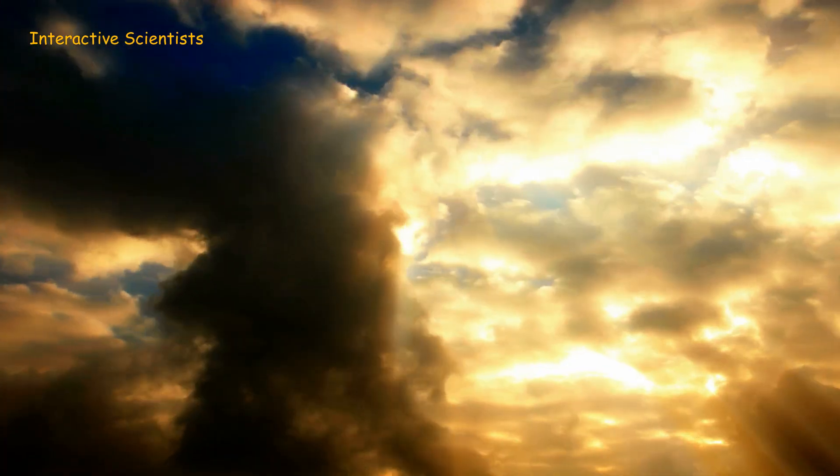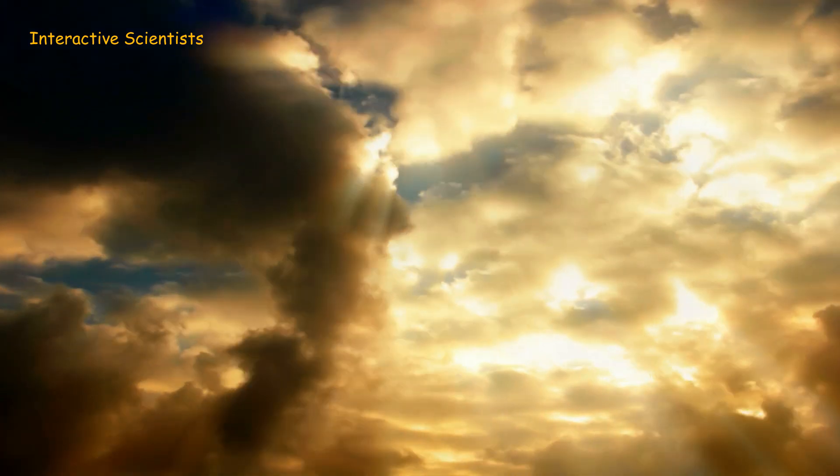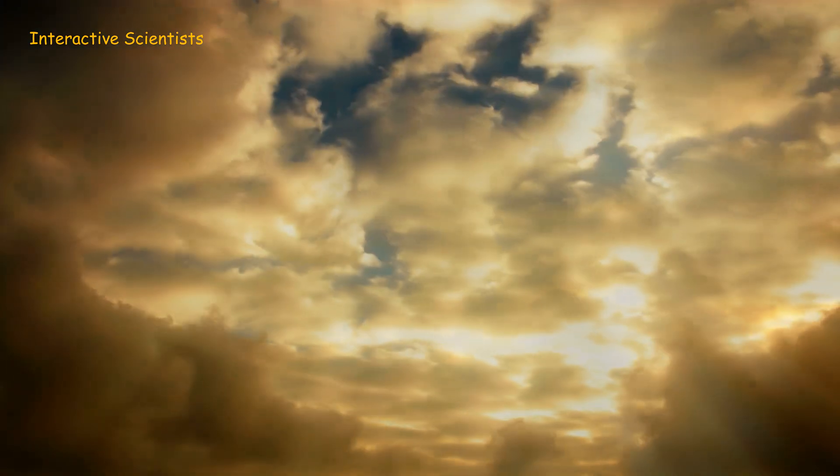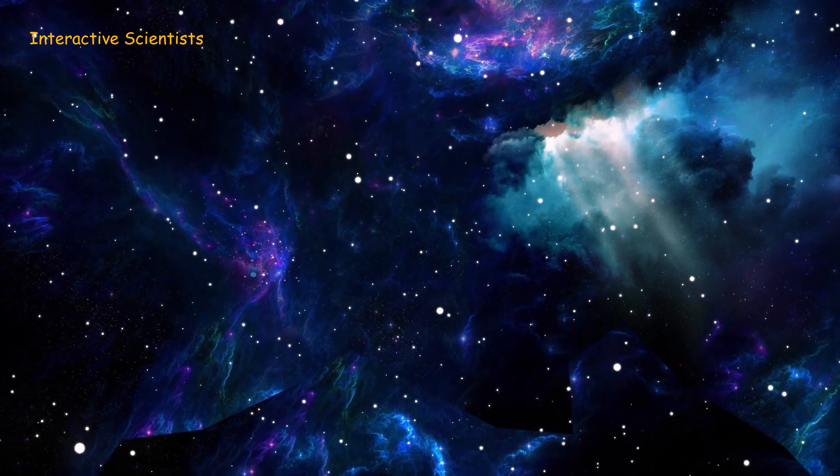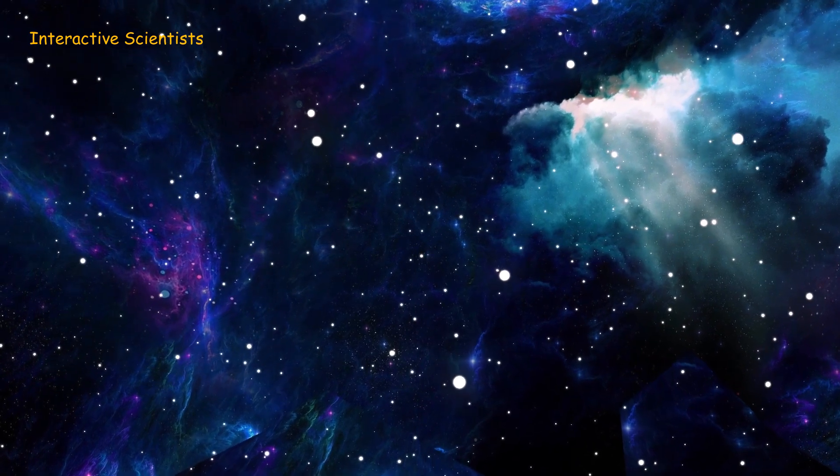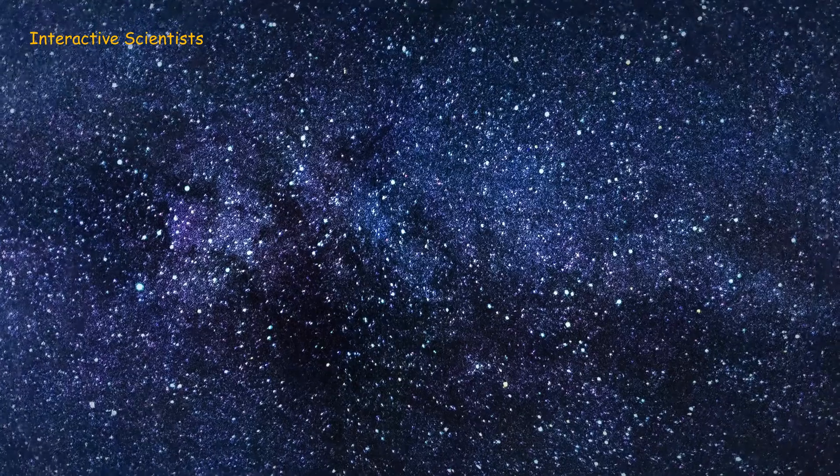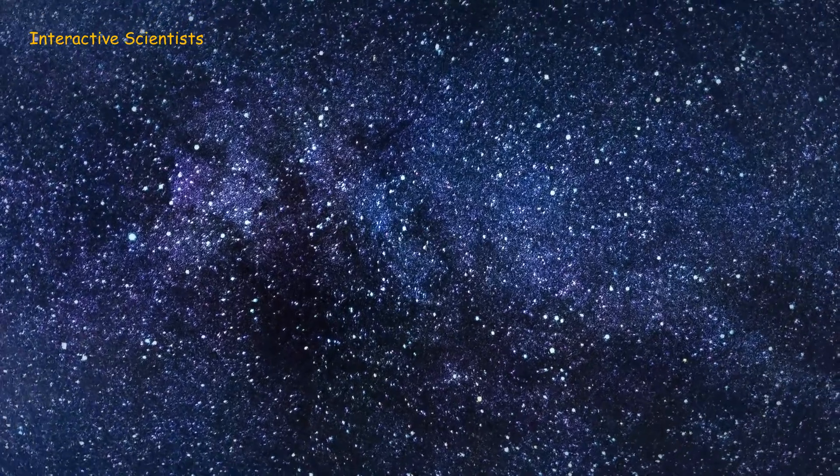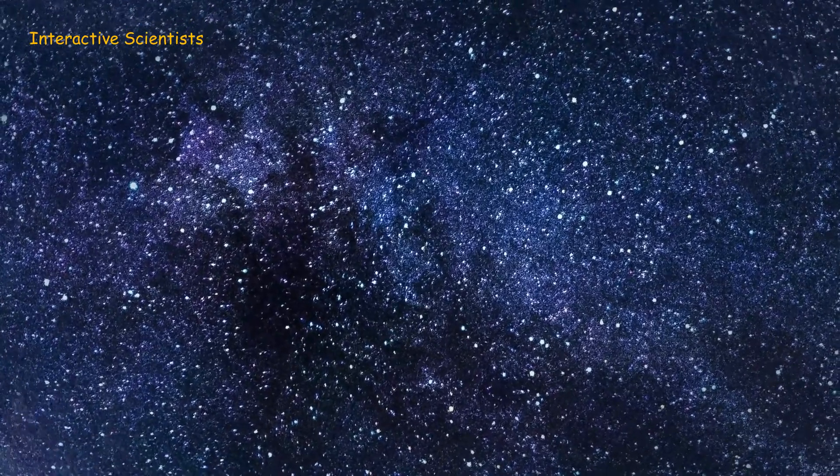The density of the cloud these protostars emerge from is so immense that the light from stars behind it cannot reach the Webb, creating the illusion of a less crowded region when, in reality, it is one of the most densely packed areas in the image.